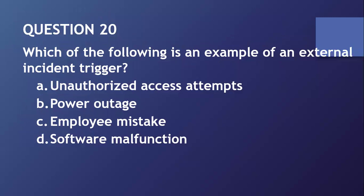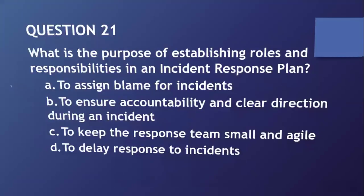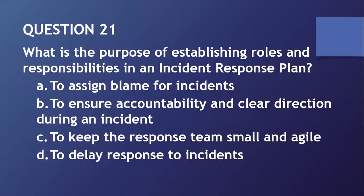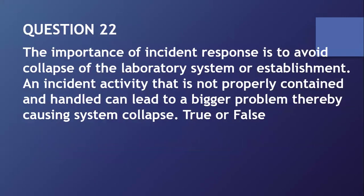Question number twenty: which of the following is an example of an external incident trigger? That would be unauthorized access attempt. Question number twenty-one: what is the purpose of establishing roles and responsibilities in an incident response plan? The answer is B — to ensure accountability and clear direction during an incident. Question number twenty-two: an incident activity that is not properly contained or handled can lead to a bigger problem, thereby causing system collapse. This is true.